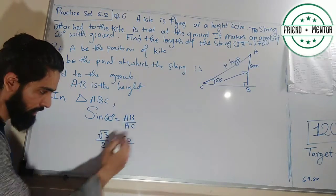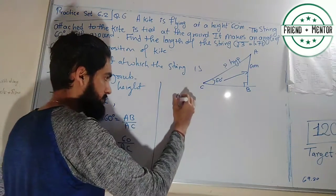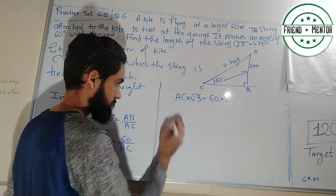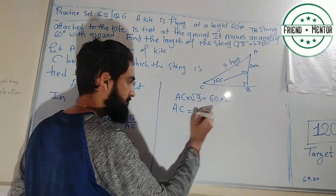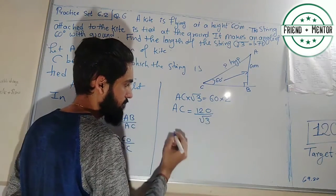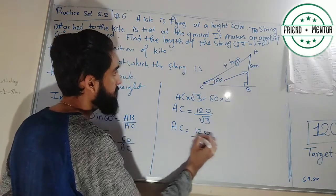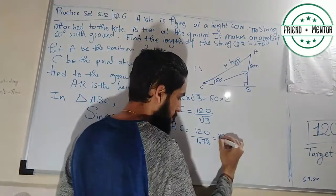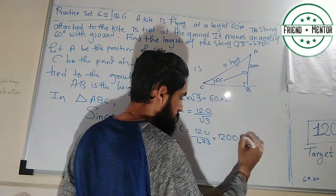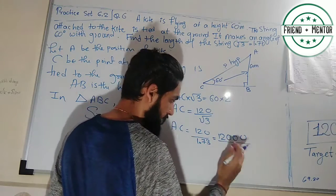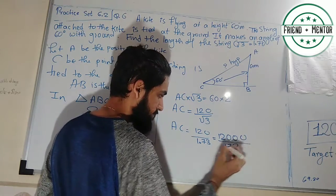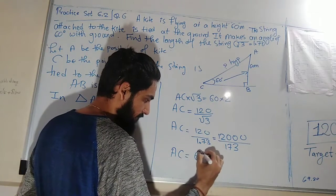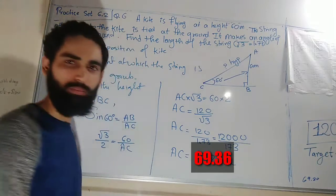Cross multiplying: AC times √3 equals 60 times 2. So AC equals 120 divided by √3. Using √3 ≈ 1.73: AC equals 120 divided by 1.73, which gives approximately 69.2 meters.